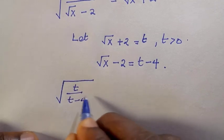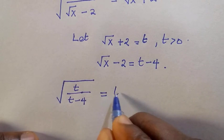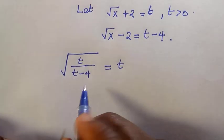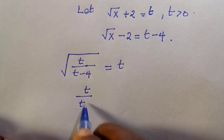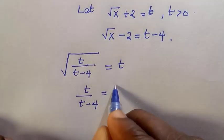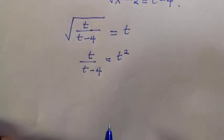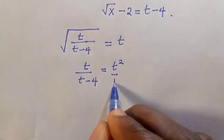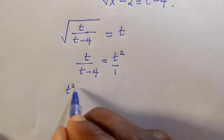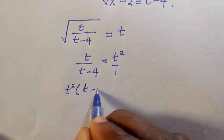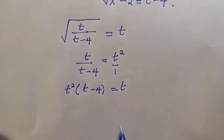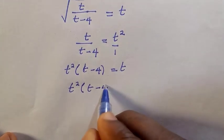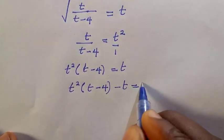We replace all values using t: t divided by t minus four, divided by t minus four, everything equals t. By taking the square root side, this becomes t divided by t minus four equals t raised to the power of one half. Cross multiplying gives t squared times t minus four equals t, and taking t to the left-hand side gives t squared bracket t minus four minus t equals zero.